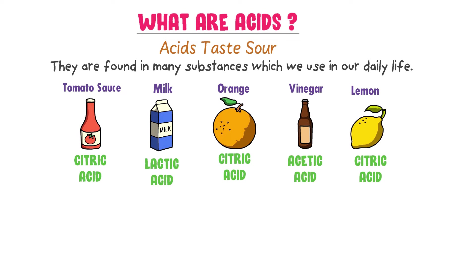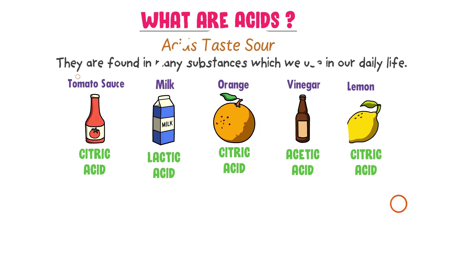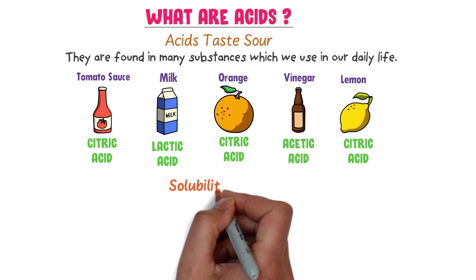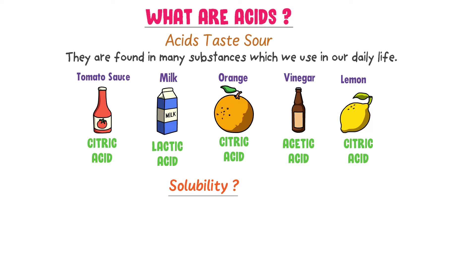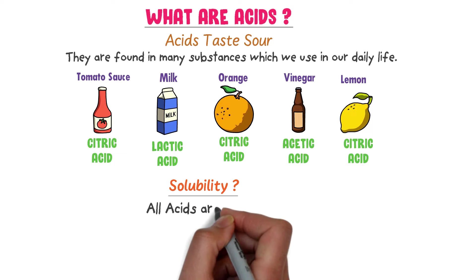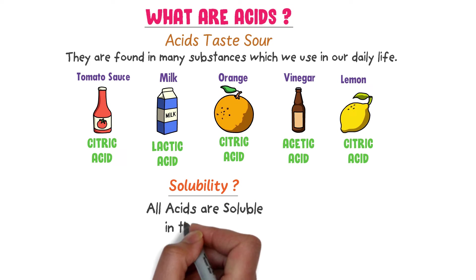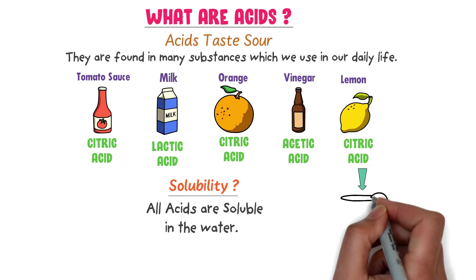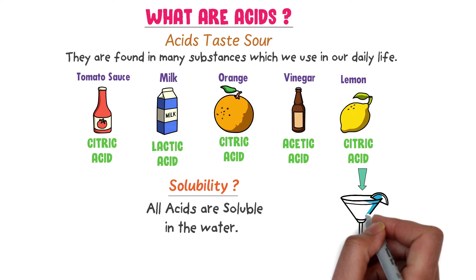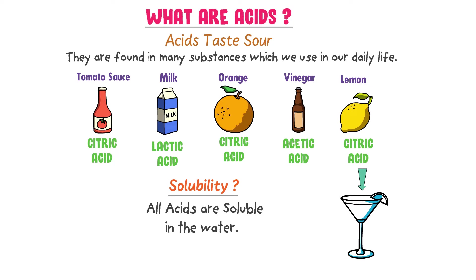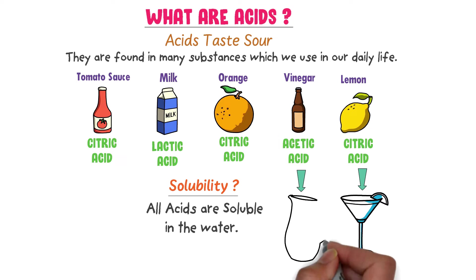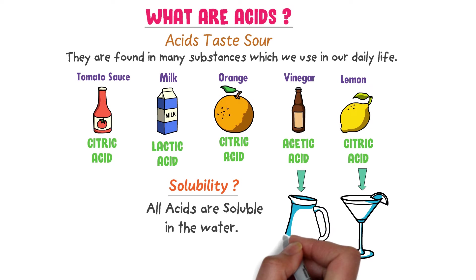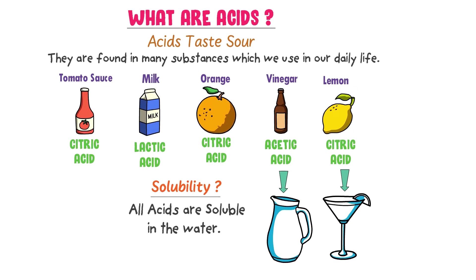So, different substances contain different types of acids. What about the solubility of acids? Usually, all acids are soluble in water. For example, lemon contains citric acid and it is soluble in water. Vinegar contains acetic acid and it is also soluble in water.